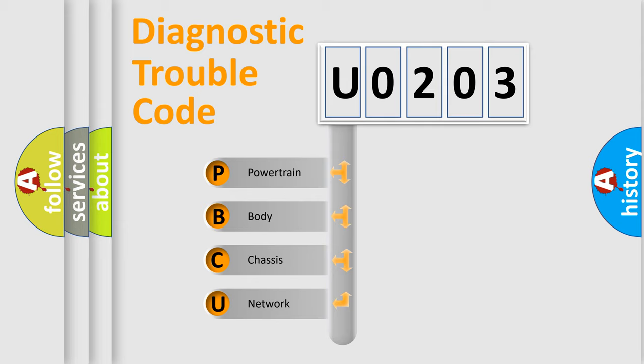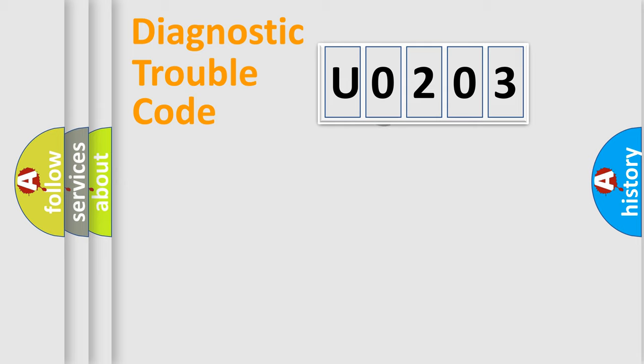We divide the electric system of automobile into four basic units: Powertrain, Body, Chassis, and Network. This distribution is defined in the first character code.